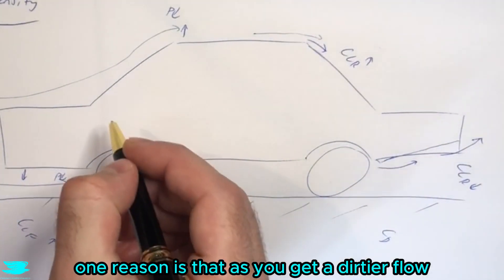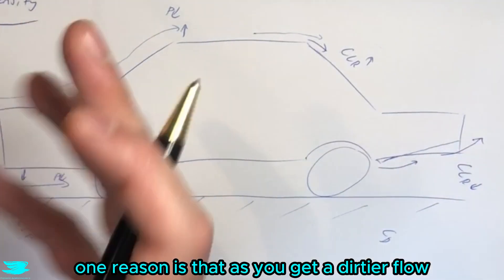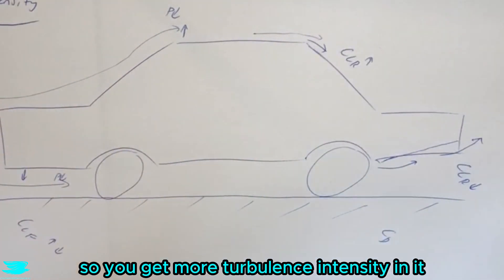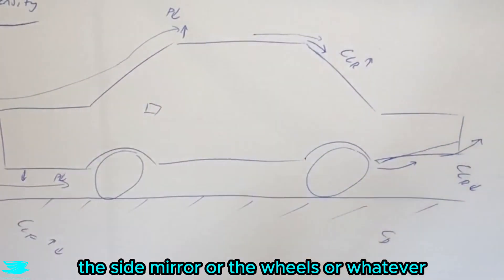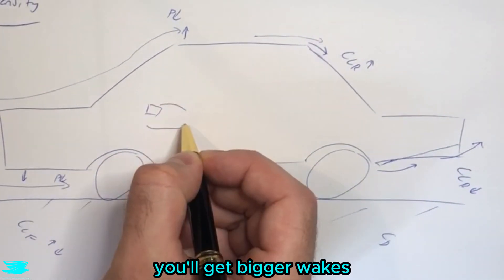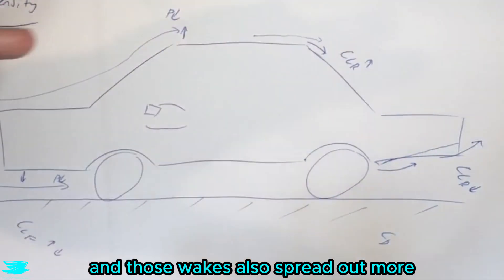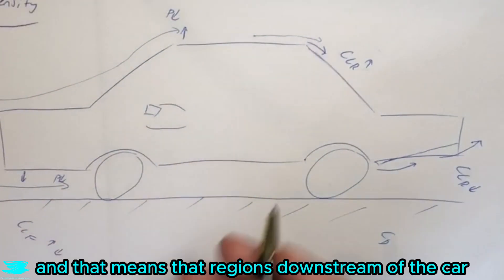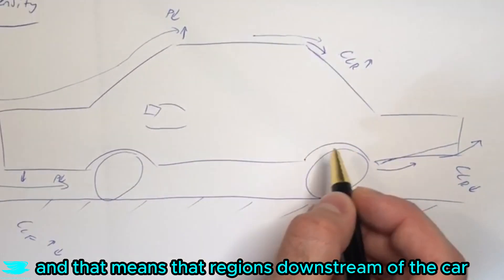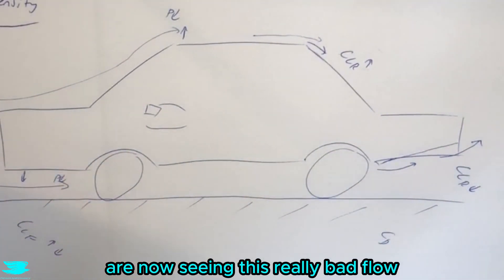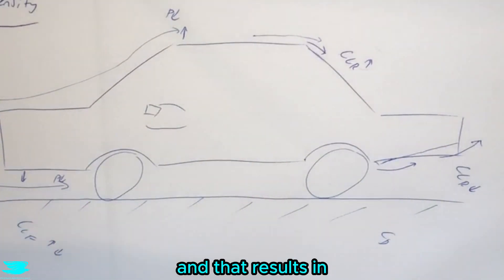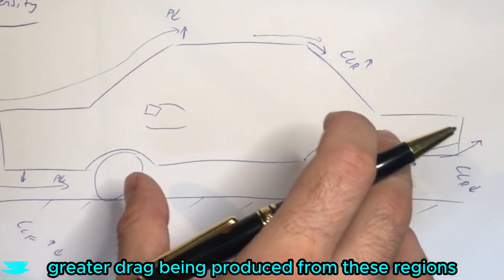One reason is that as you get a dirtier flow, so you get more intensity in it, it's going to hit certain objects, for example, the side mirror or the wheels or whatever, you'll get bigger wakes, and those wakes also spread out more, they diffuse more. And that means that regions downstream of the car, which usually would see cleaner flow, are now seeing this really bad flow. And that results in greater drag being produced from these regions as well.